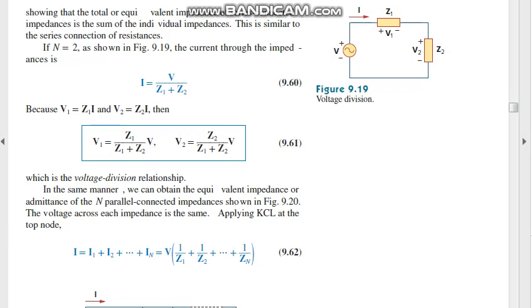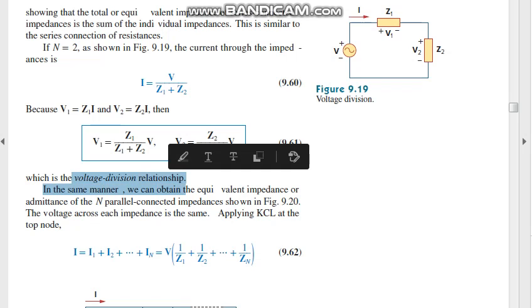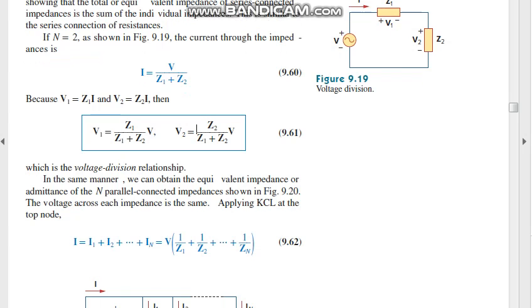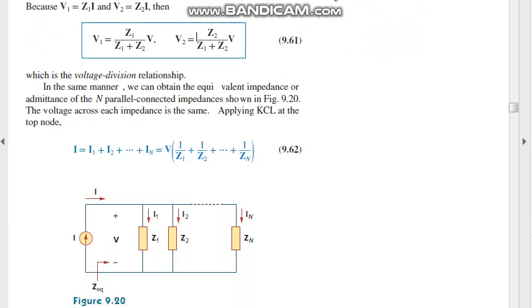You can find the voltage drop - that is V1 and V2. That is the voltage divider law, the voltage division relationship. The impedance of the voltage divided by the total impedance times the total voltage gives us the voltage division relationship.